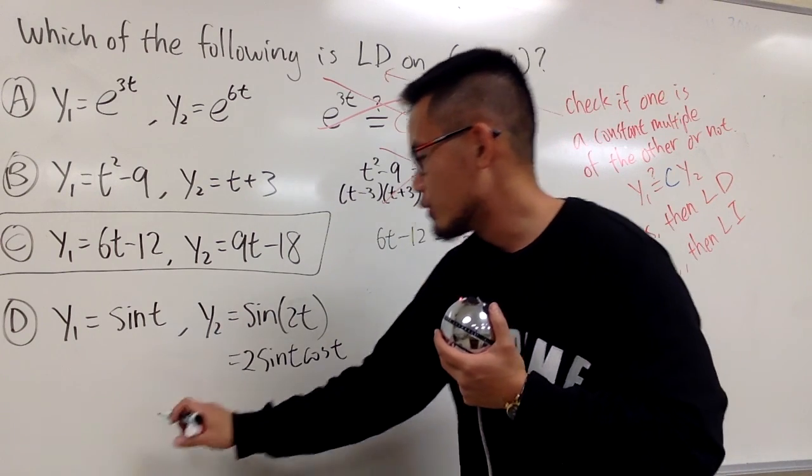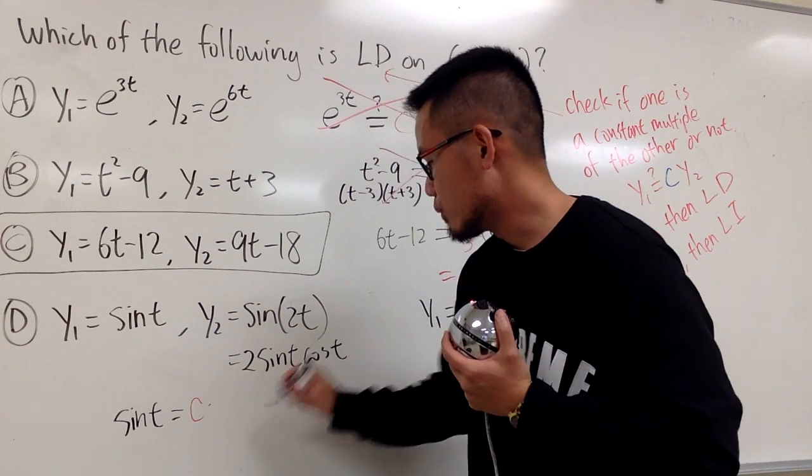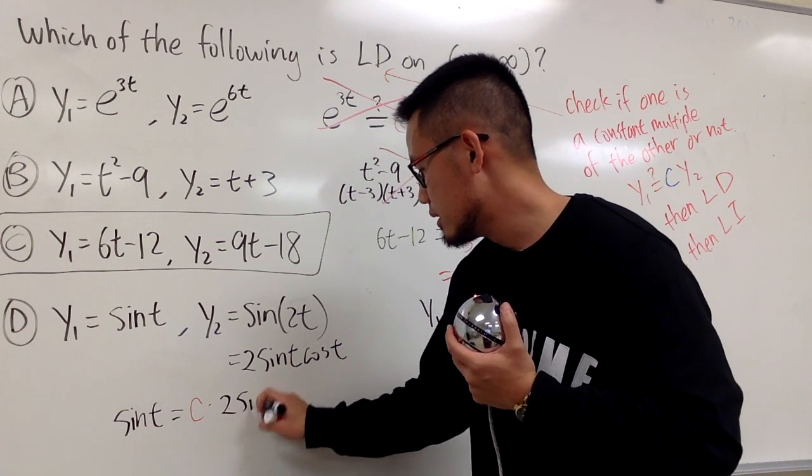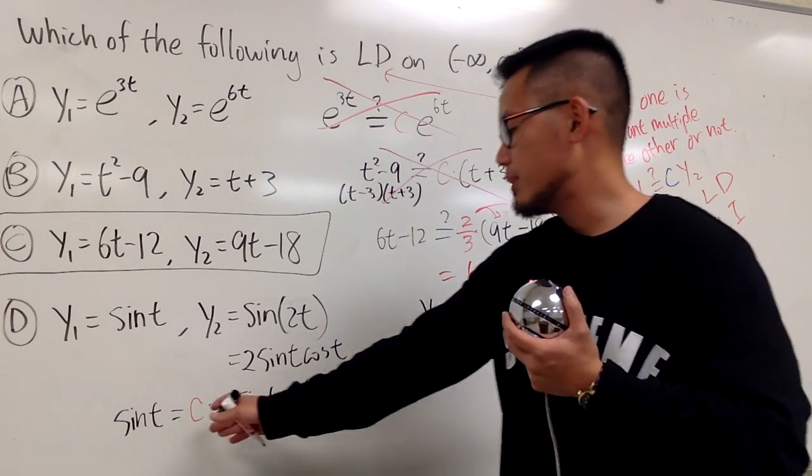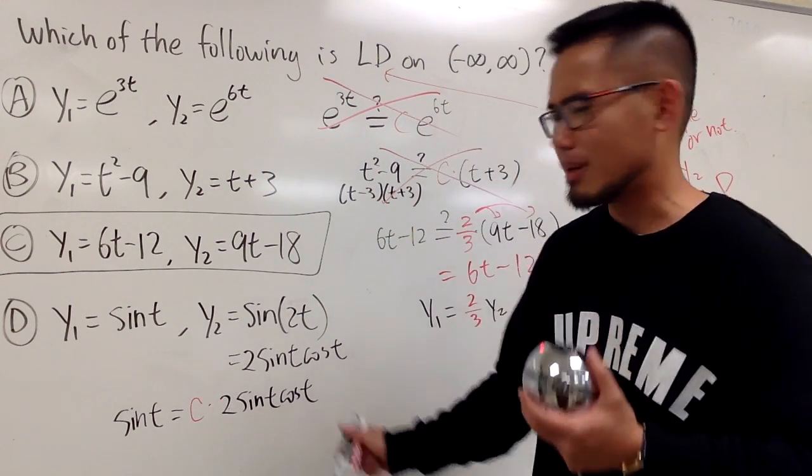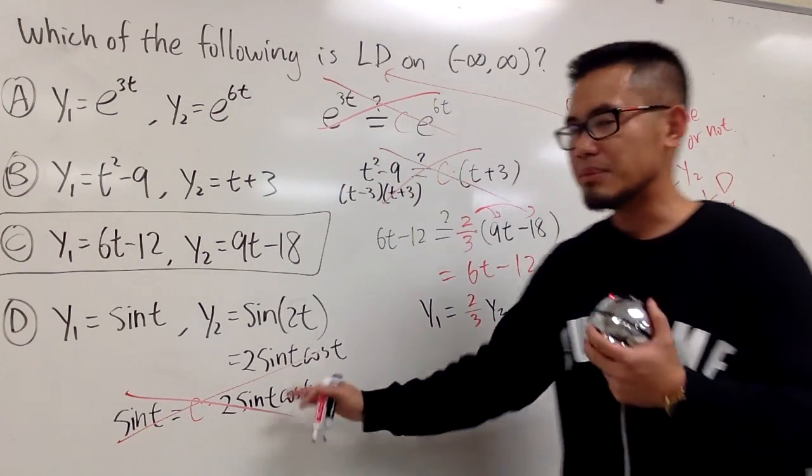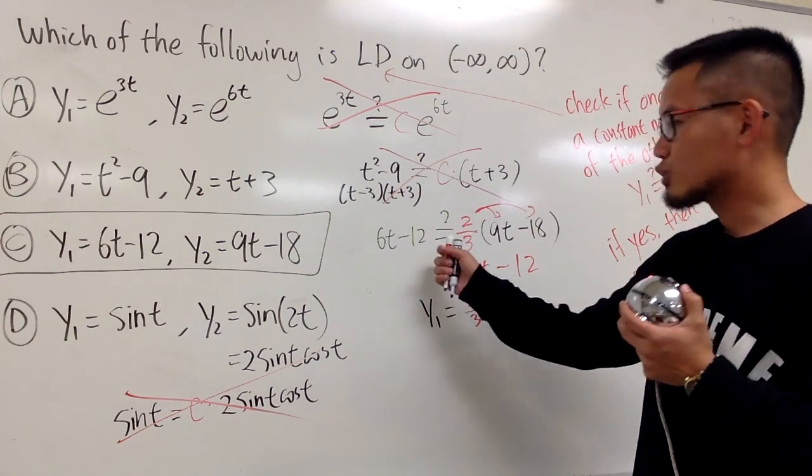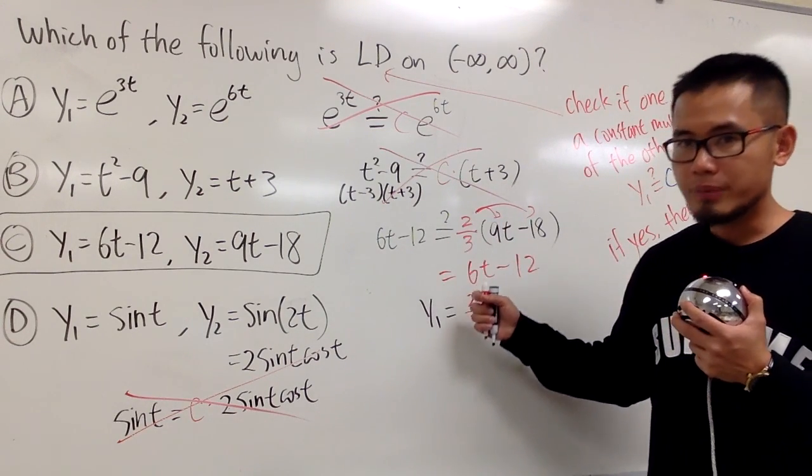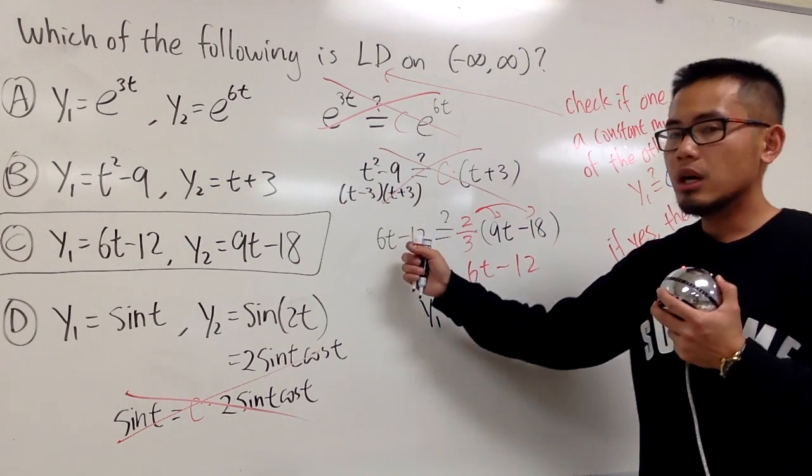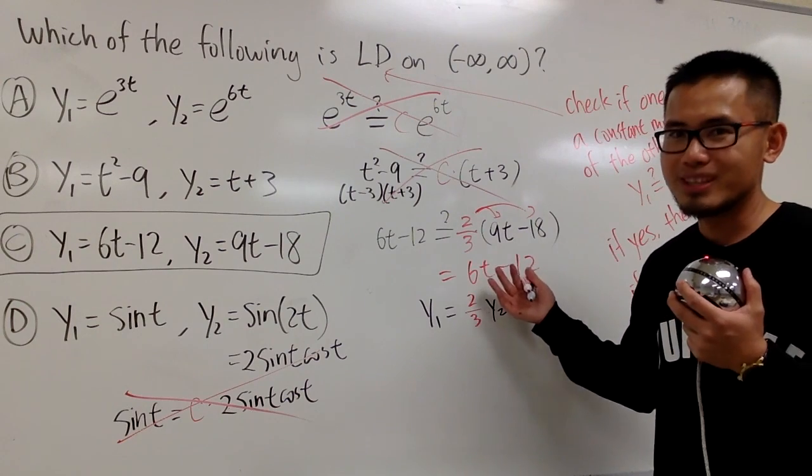Once again, if you want to put down, can I put down sine t to be c times the other one, which is this? Can I pick a c value to make this true? Not possible. So, for this, it's actually real quick. If you don't want to go through this kind of step, it's actually okay, because all you are trying to do is try to find out the constant to make sure that you can show me the first function. It's a constant multiple of the second, and just show me like this, and that'll be great.